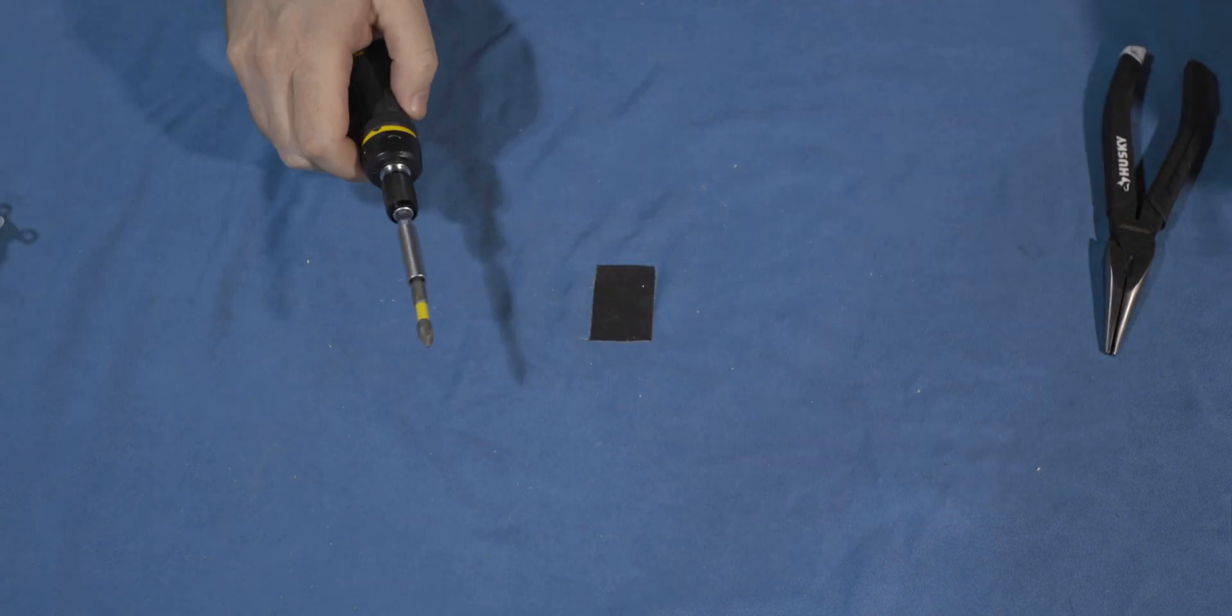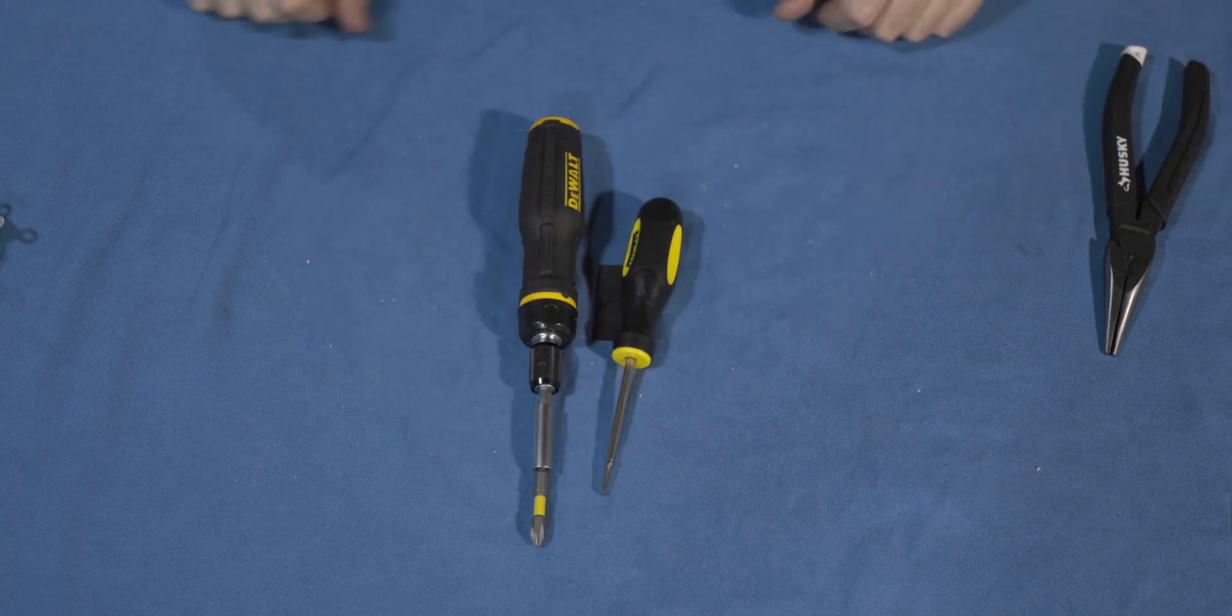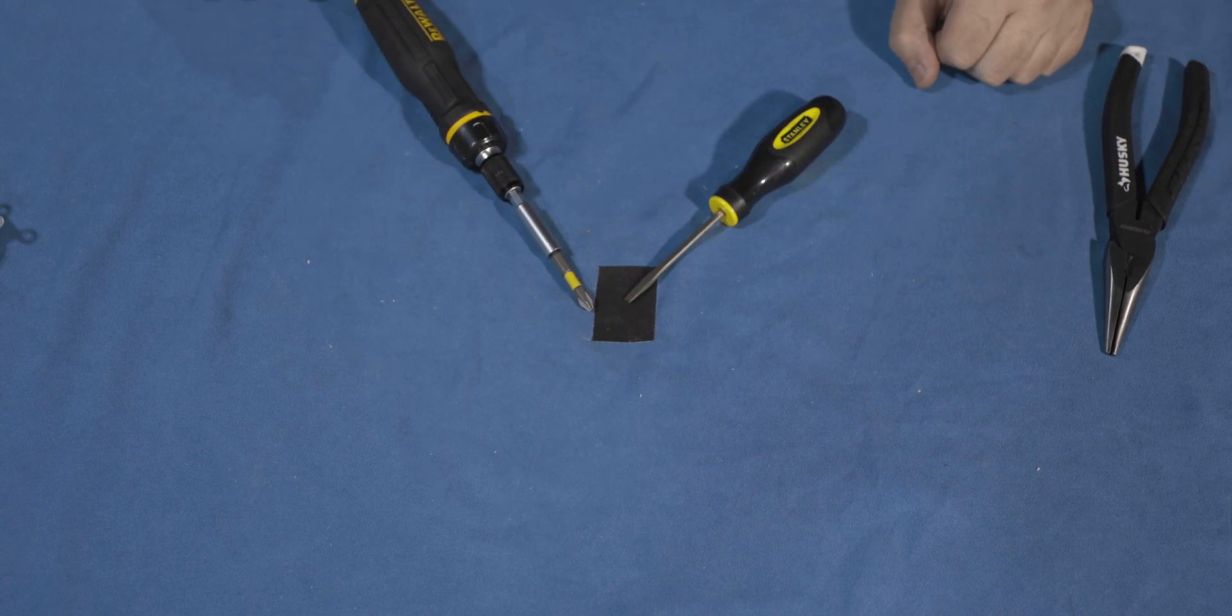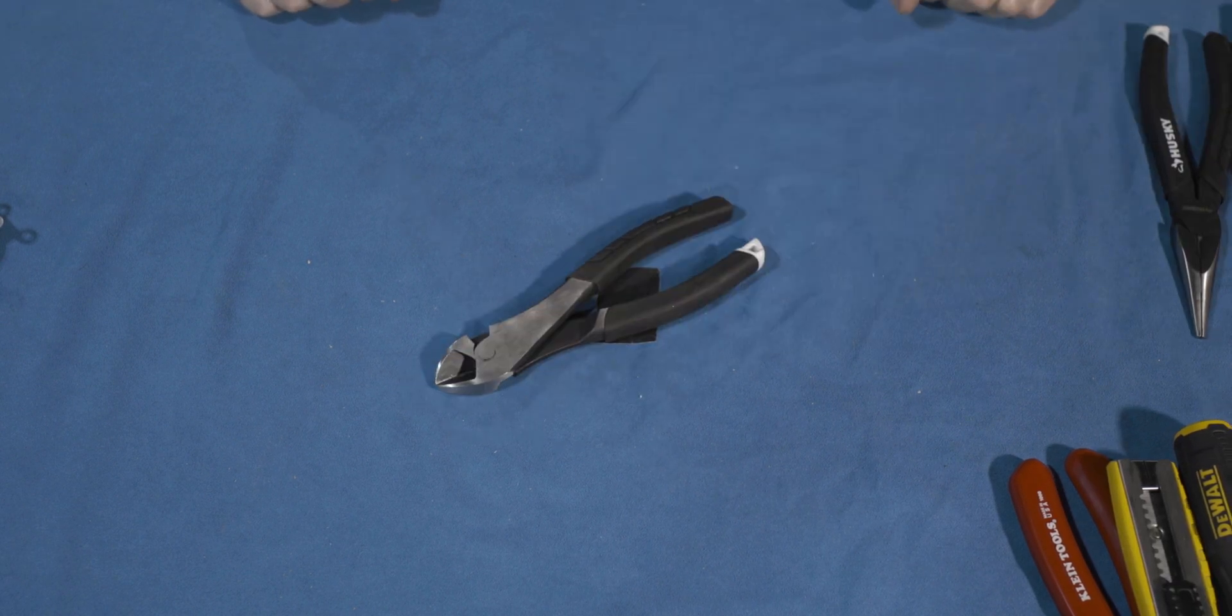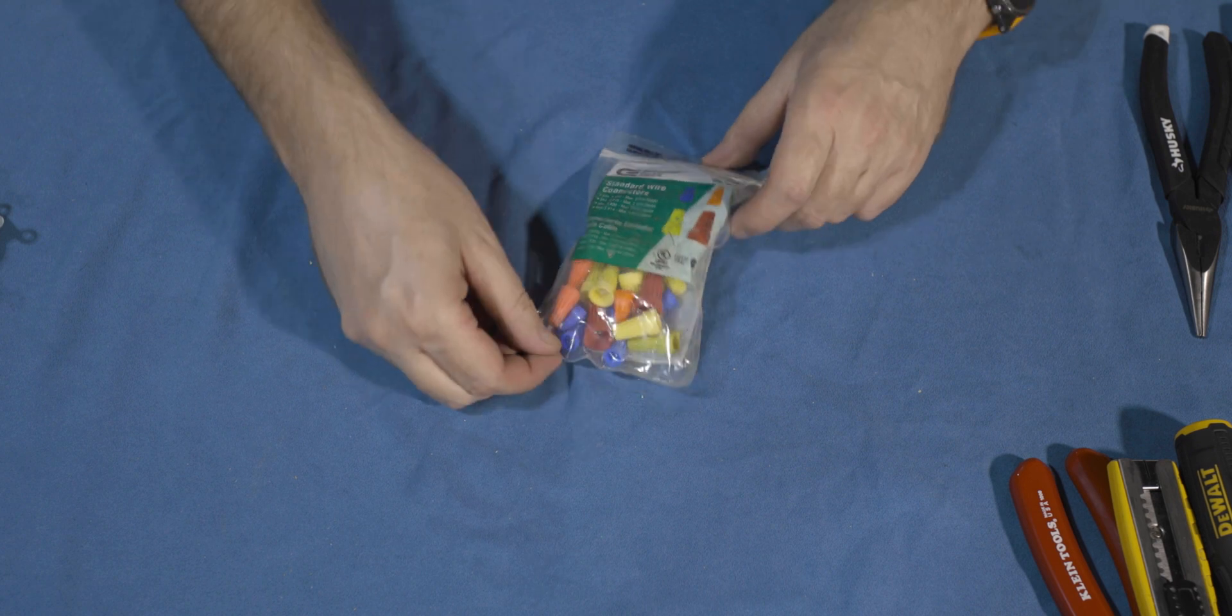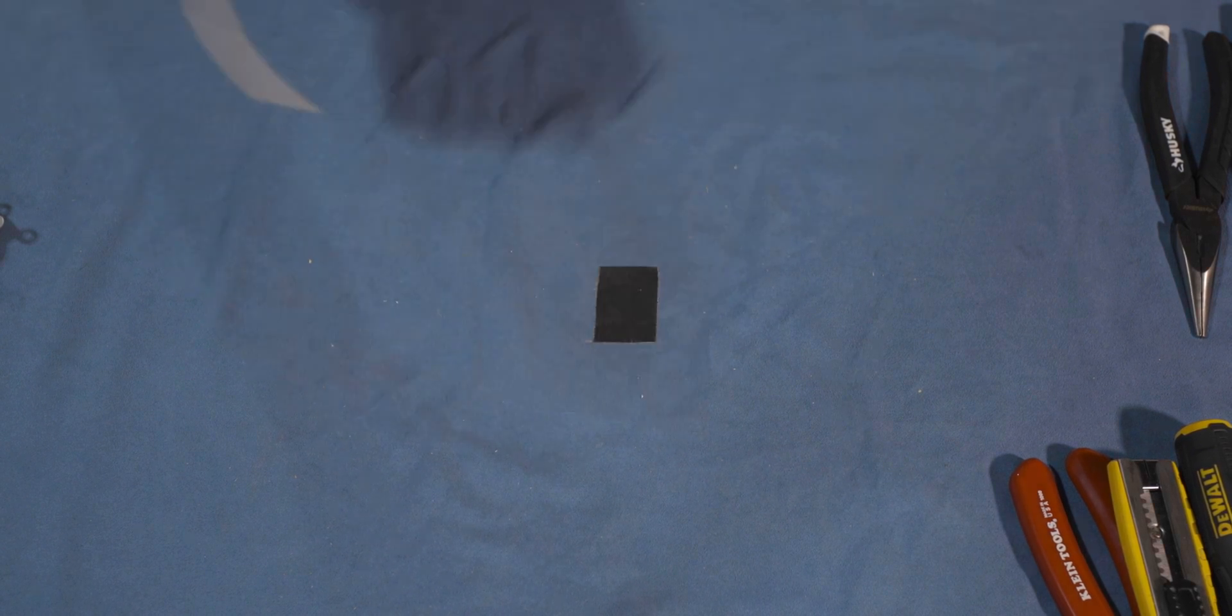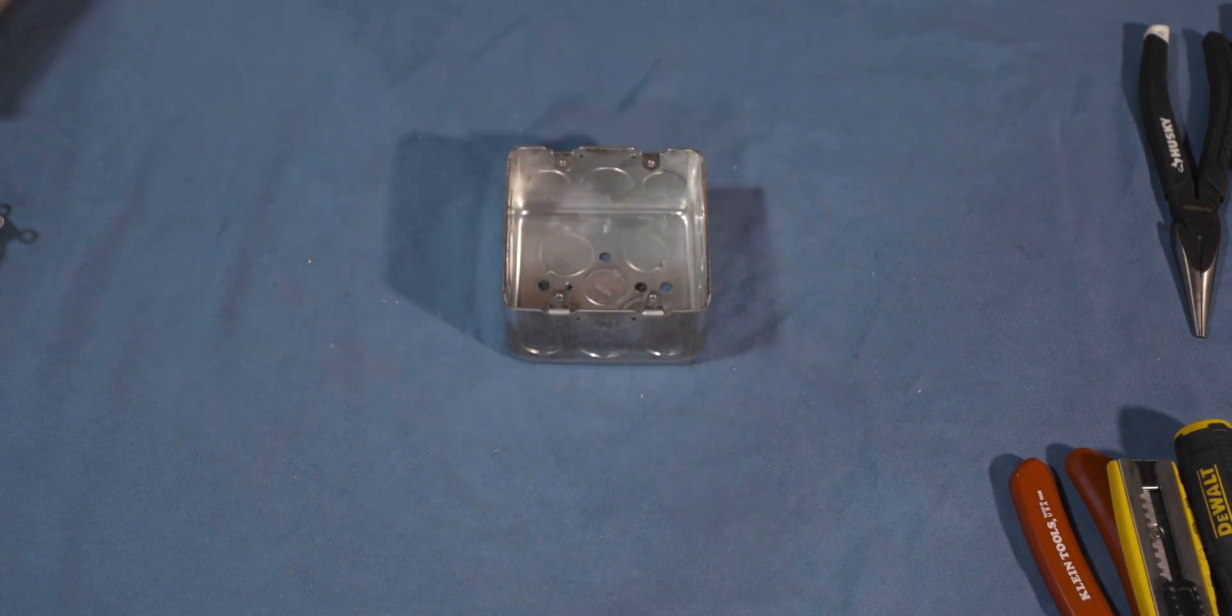For tools, we are going to need a phillips and flathead screwdriver, wire stripper, razor blade, needle nose pliers, lineman pliers, side cutters. We're also going to need wire nuts. We are going to start off like we did in the last video, and build us a box.